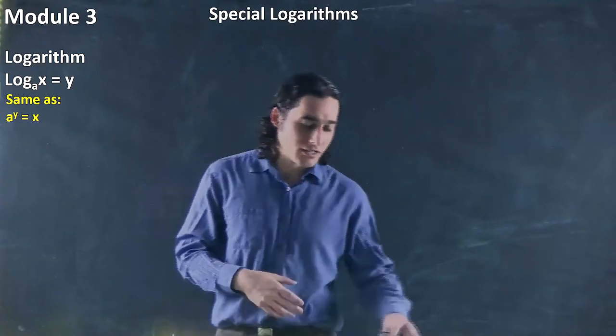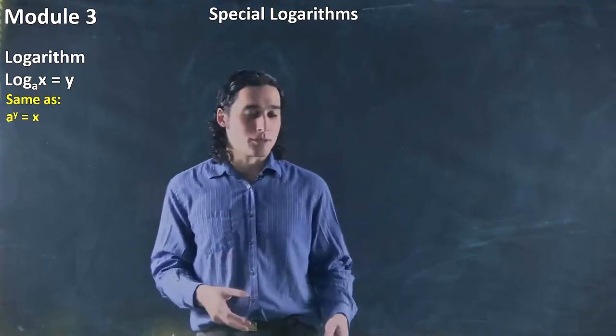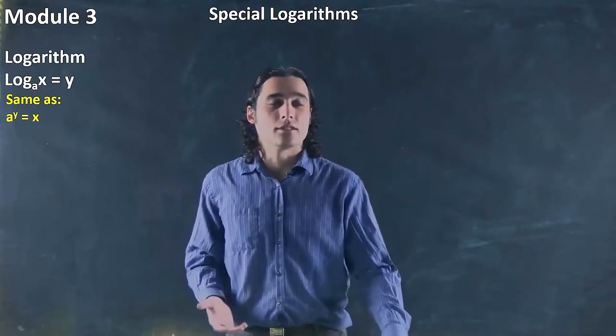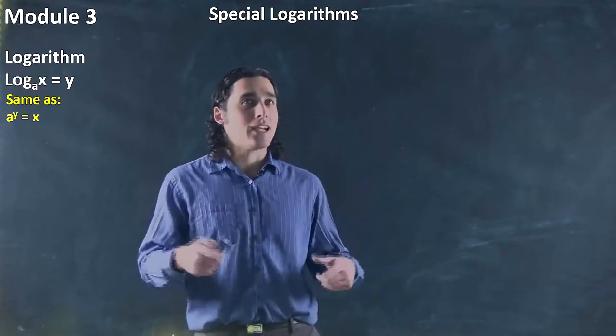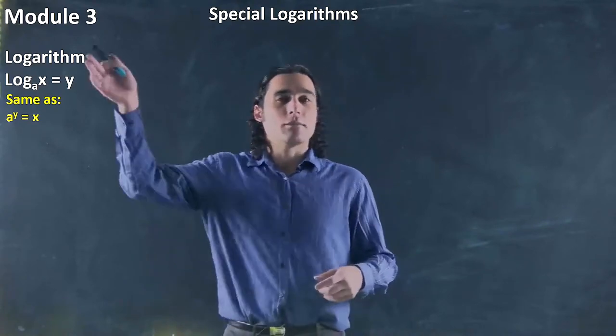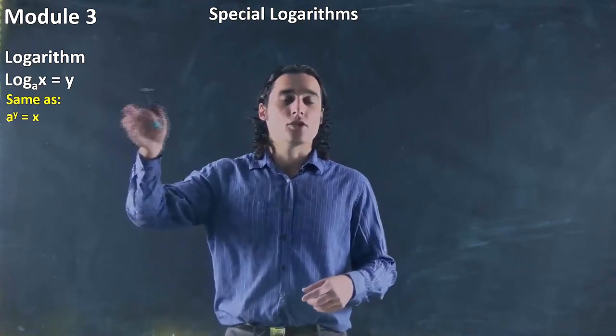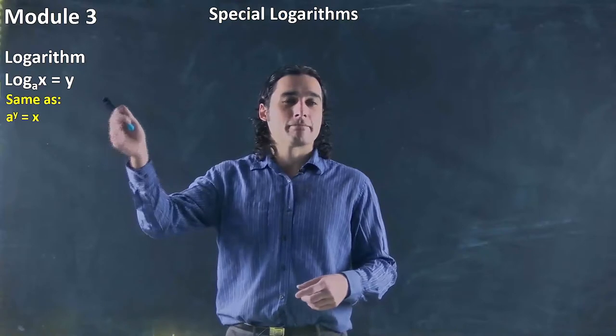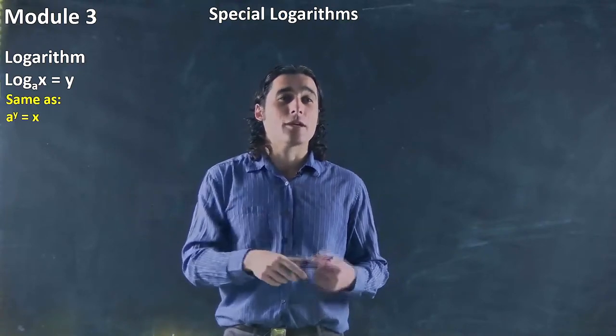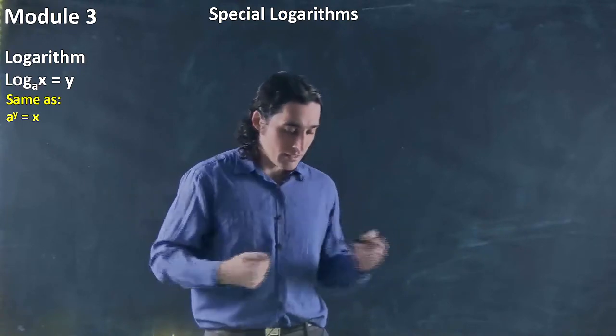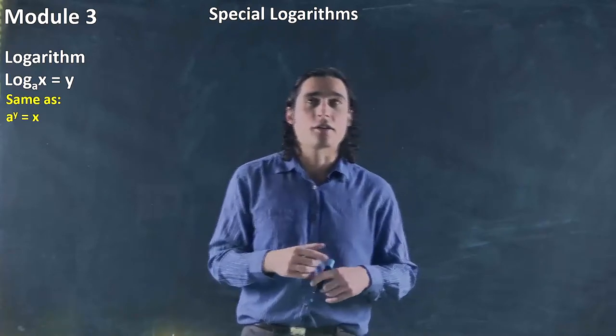But I also want to talk about a couple special cases. So called special logarithms, or mainly kind of confusing ones. Because you might see these logarithms, and I said normally you're going to have log to the base a of x. There's always a base. But there's a few cases where you might not see the base. These so-called special or common logarithms.